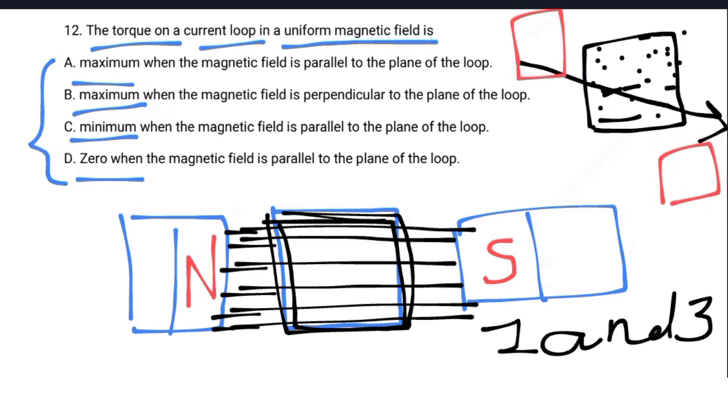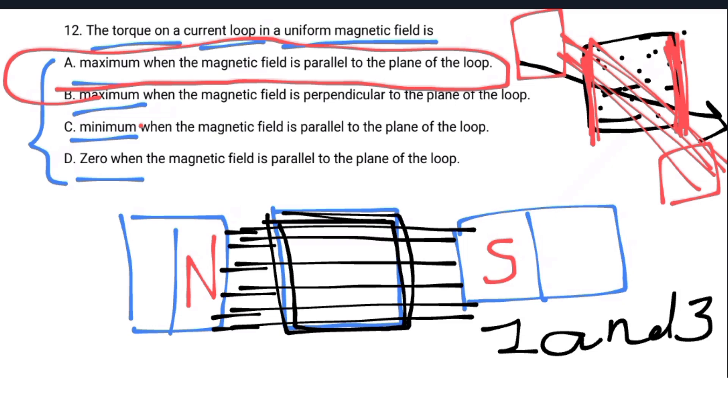The torque on the loop is maximum when the magnetic field is perpendicular to the plane of the loop. If the magnetic field is perpendicular to the loop, the torque is maximum. The choice is A, maximum when the magnetic field is perpendicular to the plane of the loop.